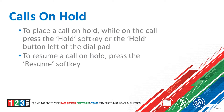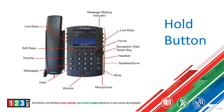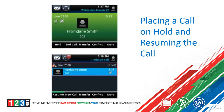To place a call on hold when you're on the call, you can either press the hold soft key below the screen, or press the physical hold button left of the dial pad below the voicemail button. To resume, you would press the resume soft key below the screen, or press the physical hold button on the phone again. If Jane Smith is calling in and you wish to place her on hold, you would press the hold button, and then press resume or the physical hold button to resume the call.